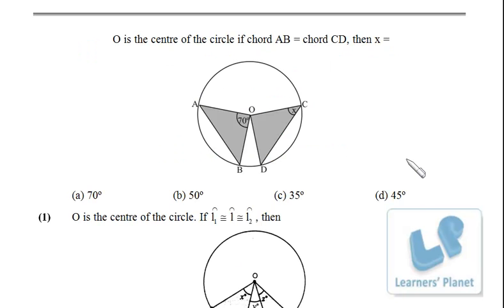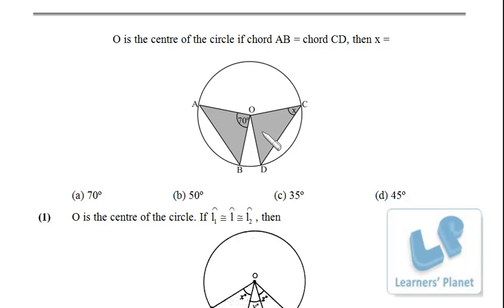Now let's see some more basic problems. First: O is the center of the circle. If chord AB is equal to chord CD, find the value of x. The very basic property we discussed is that equal chords subtend equal angles at the center. So if AB equals CD and arc AB makes an angle of 70° at the center, then arc CD will also make 70° at the center. So this angle is 70°.